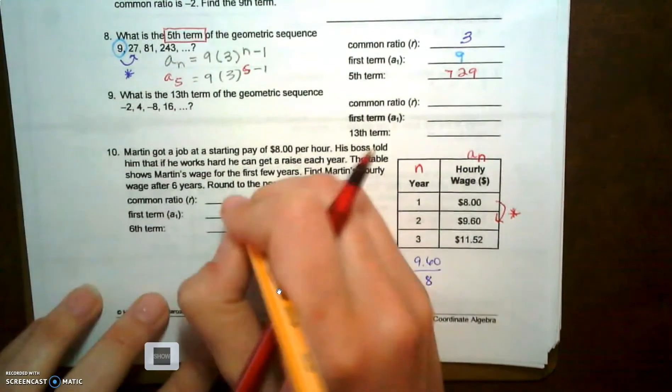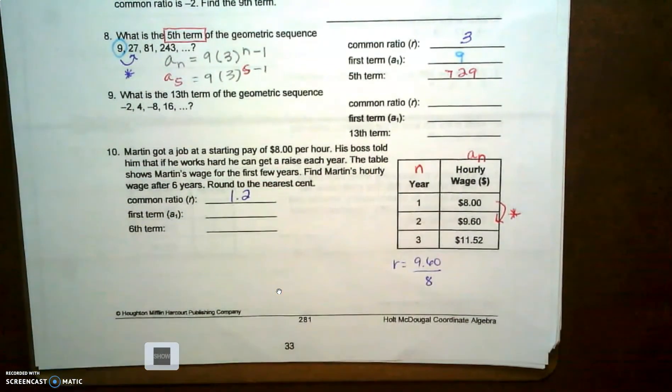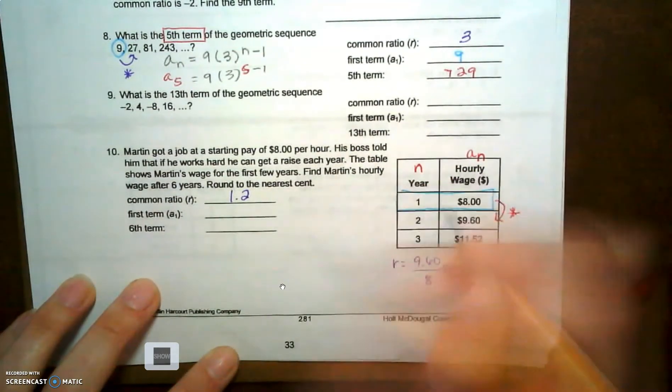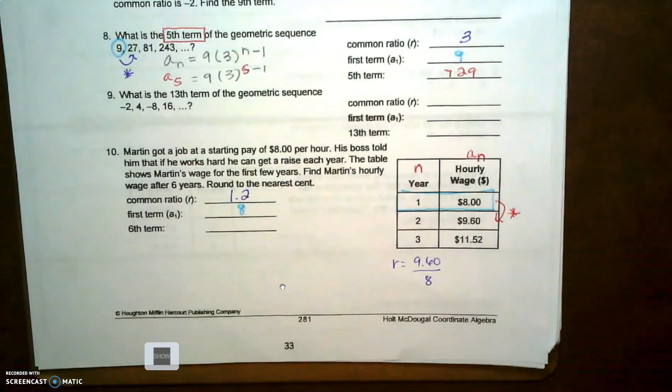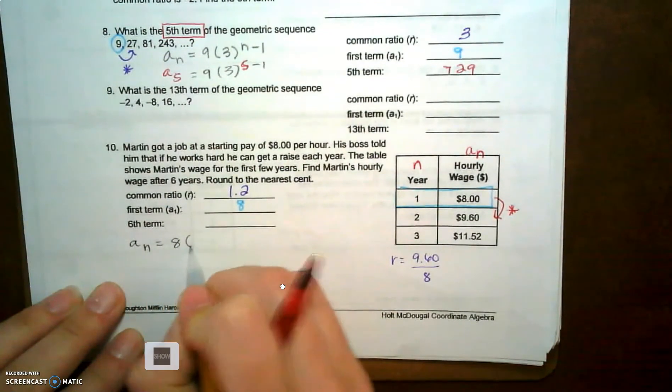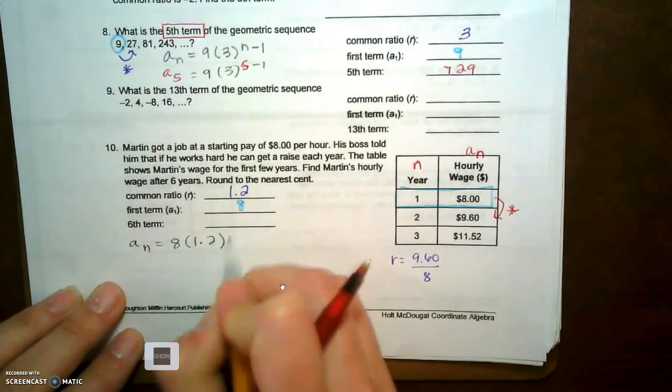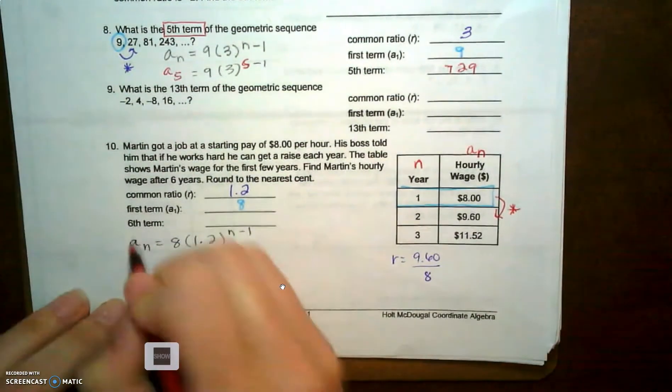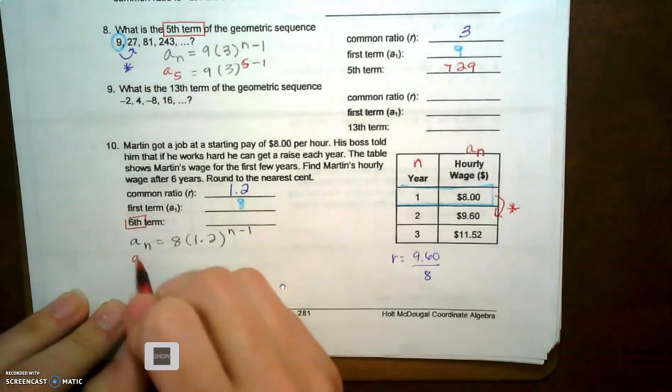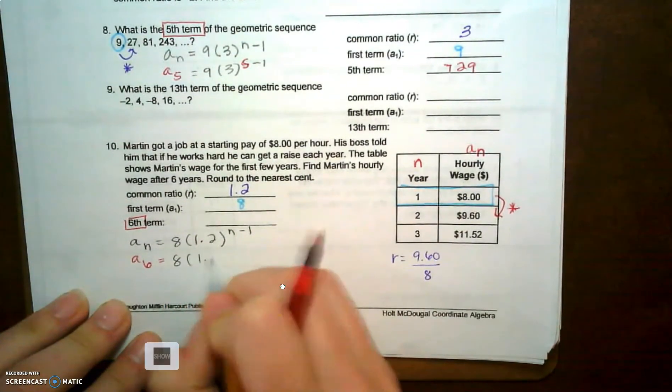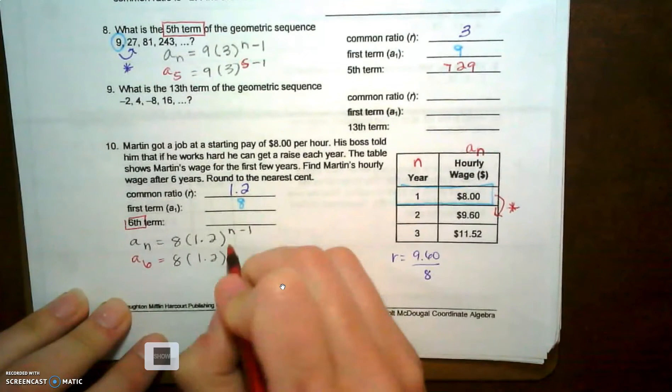My first term is year one, so that's eight dollars, and I can write an explicit equation from that: a sub n equals my first term times my ratio raised to the n minus one. So if I'm finding the sixth term, I can still substitute that six in for the n spot.